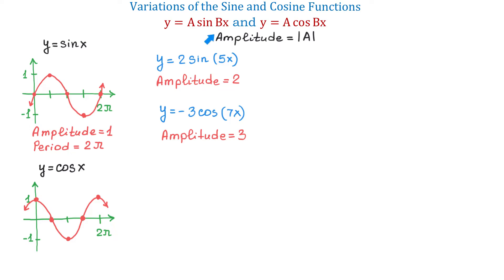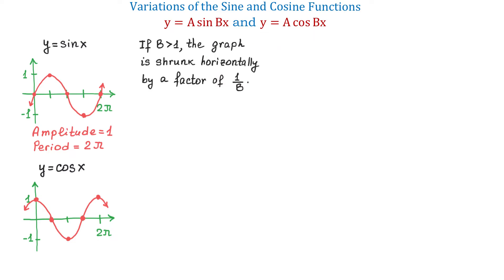Now let's talk about the number b and see how it affects the graph. Because of b, the graph will stretch or shrink horizontally. When b is greater than 1, the graph is shrunk horizontally by a factor of 1 over b. This means that if the basic sine function has the period of 2 pi, then a sine function with b greater than 1 will have a period less than 2 pi.